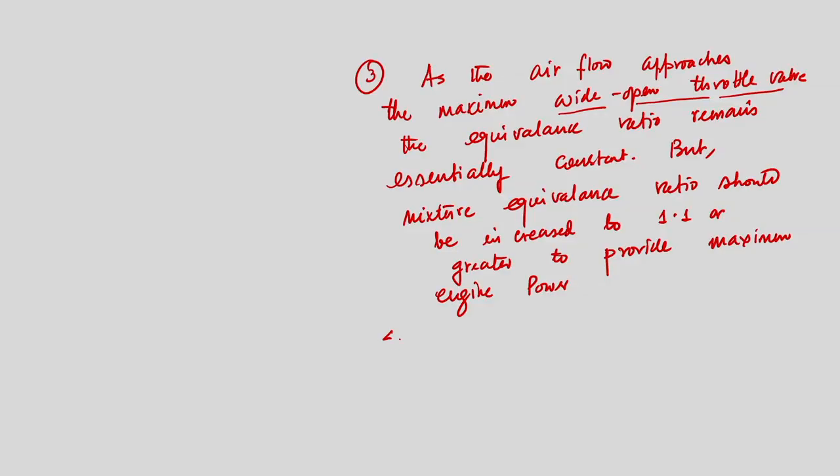Number four: the elementary carburetor cannot adjust for transients. It will always supply a constant air-fuel ratio, so it cannot compensate for transient phenomena in the intake manifold.